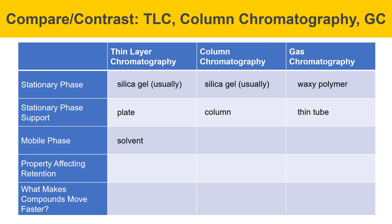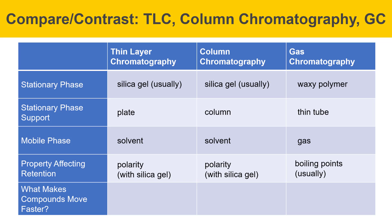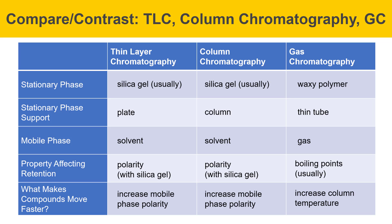The mobile phase in TLC is a solvent, as it is in column chromatography, but in gas chromatography it's a gas. The property affecting retention in thin layer chromatography is polarity, and this is definitely true with silica gel. Column chromatography is the same — if it's using silica gel, it's polarity — and in gas chromatography, it's boiling points that affect retention. What makes compounds move faster: in thin layer chromatography, increasing the mobile phase polarity causes all spots to move faster up the plate. In column chromatography, also increasing the mobile phase polarity causes compounds to move faster down the column, and in gas chromatography, it's an increase in column temperature that causes all compounds to move faster through the column.